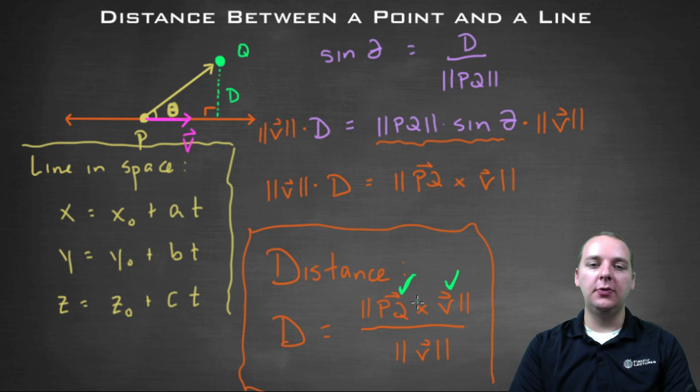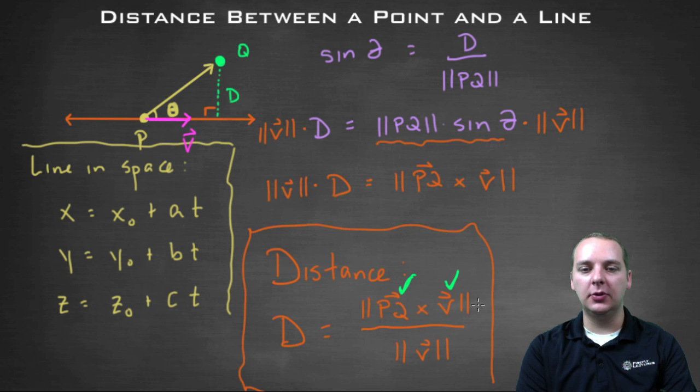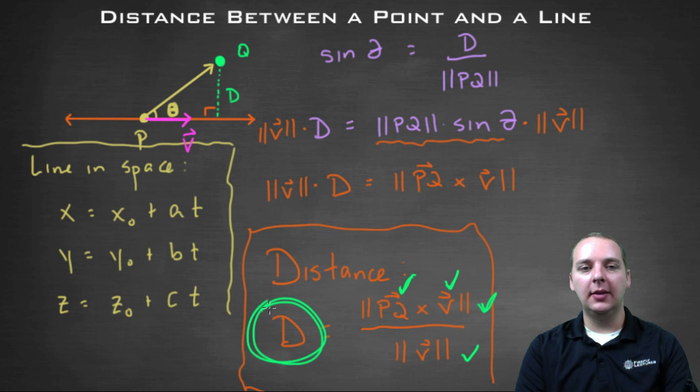And so if you have those two vectors, you can take their cross product, and then take that guy's magnitude, which will give you this result. And divide it by the magnitude of V, which you can also do as well. So you do all those little individual items, and what you come away with, is the distance that you are after.